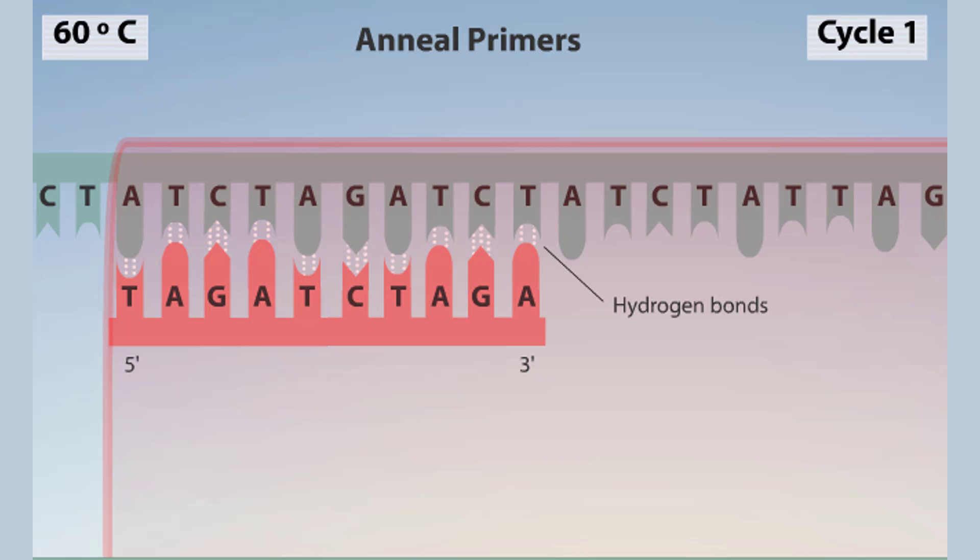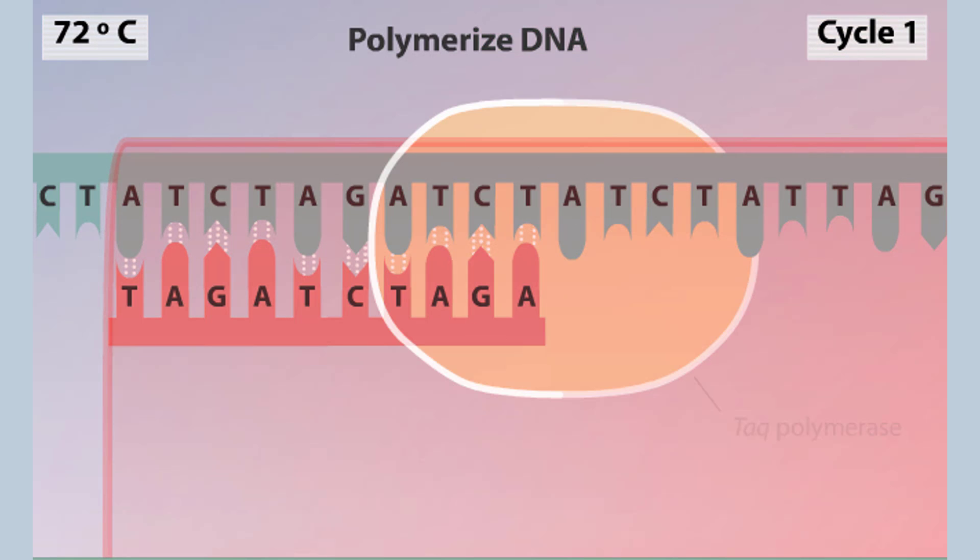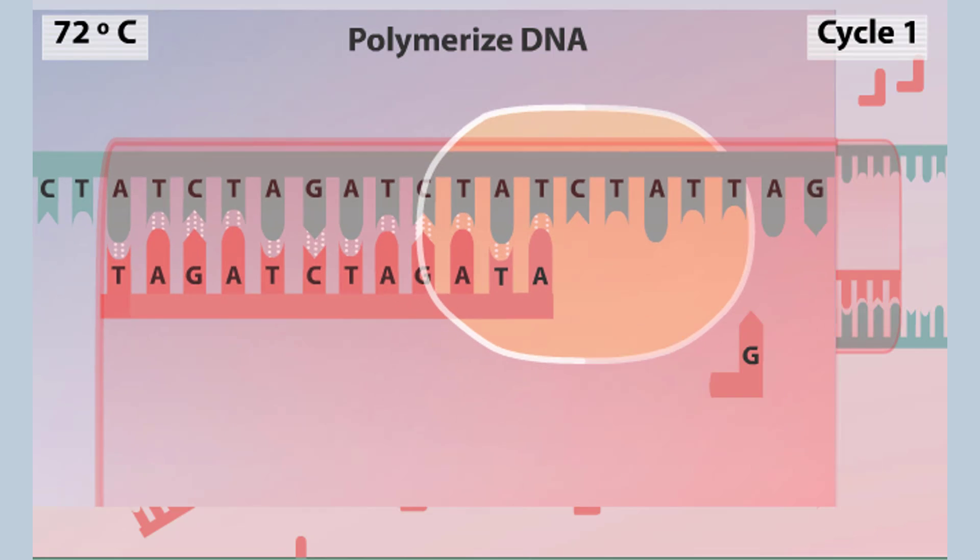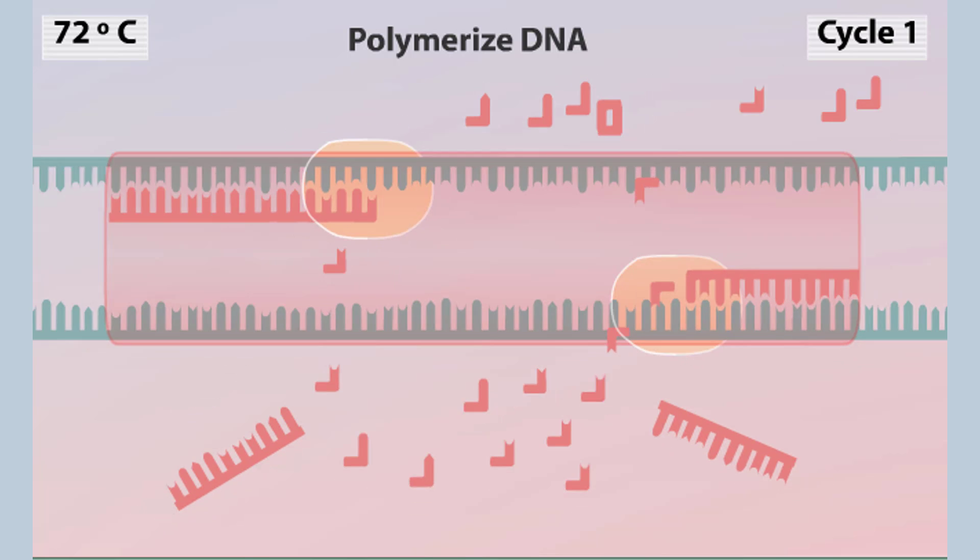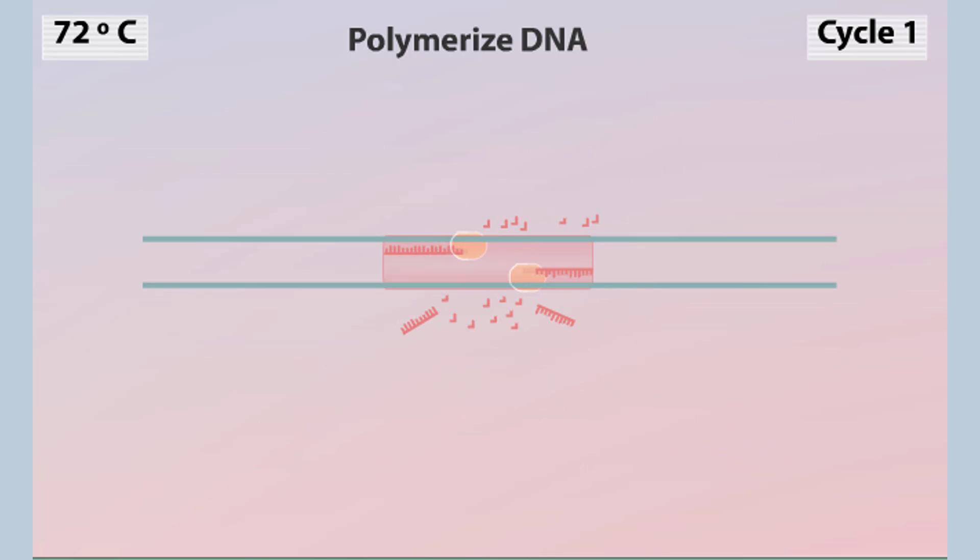In the next phase, the temperature is raised to 72 degrees Celsius. TAC polymerase functions optimally at this temperature and begins polymerization, adding nucleotides to the three prime end of each primer attached to the DNA strand. After one complete cycle, there are two double-stranded copies of the target DNA.